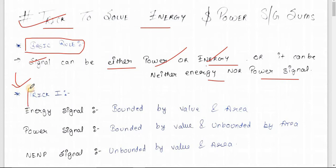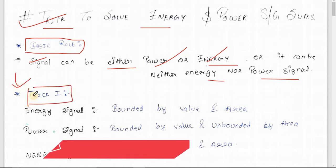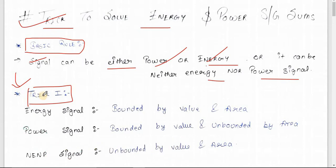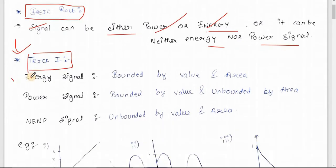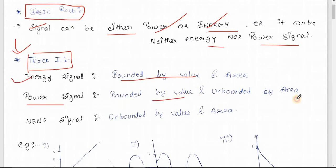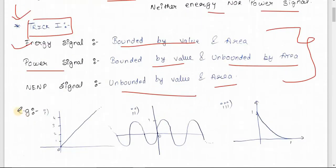This first trick is useful for one-mark questions where you are just asked to find out whether a given signal is energy or power signal - not the exact value. Your signal will be an energy signal if and only if it is bounded by value and area. It will be a power signal if bounded by value but unbounded by area. It will be neither energy nor power if unbounded by both value and area.